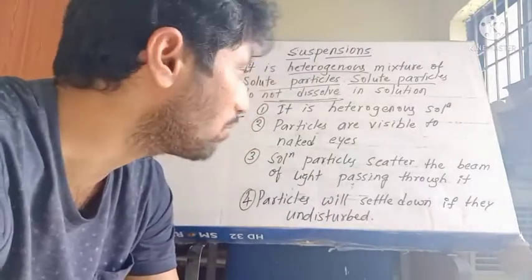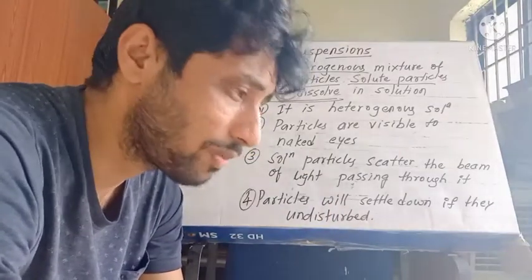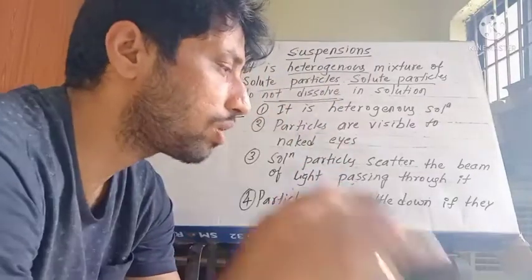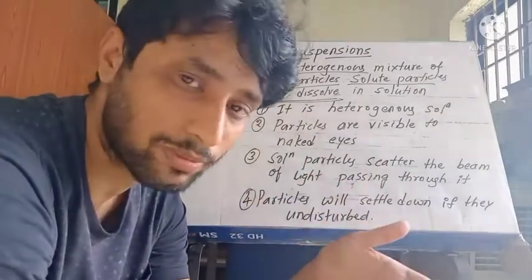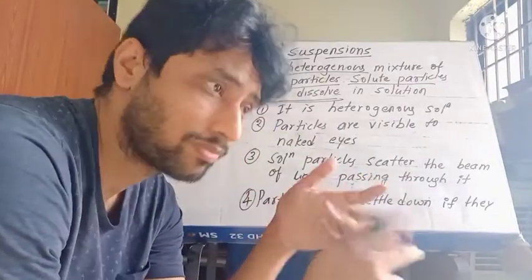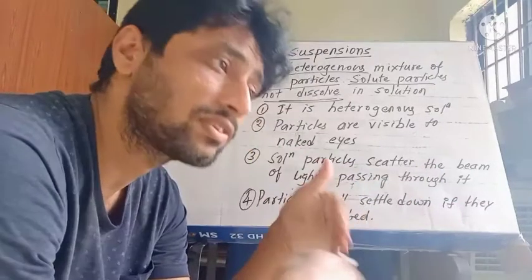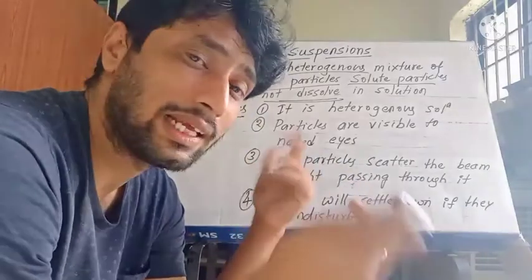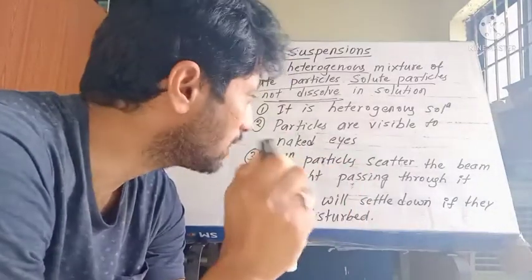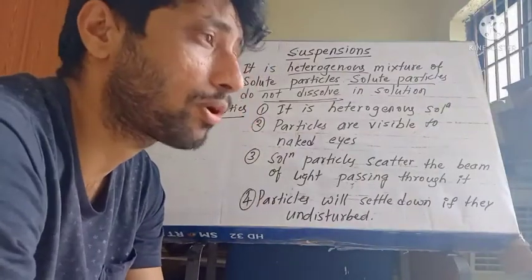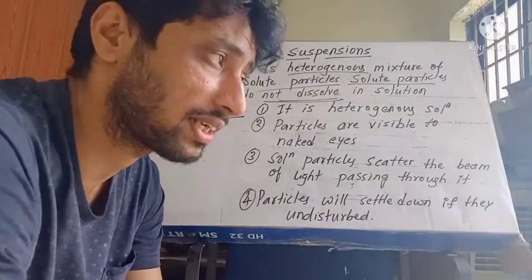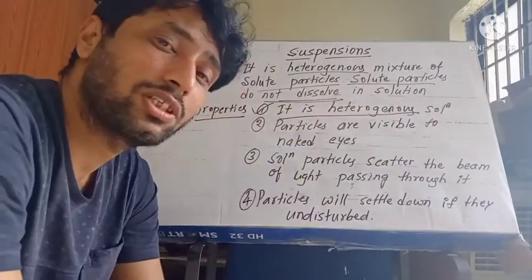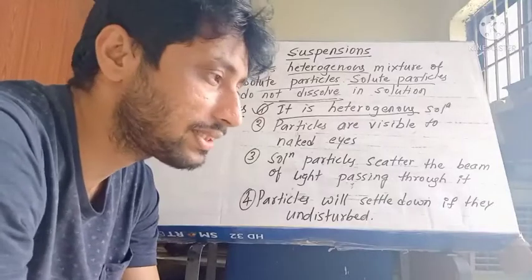Because the particles do not dissolve, it is called a heterogeneous mixture. So the definition of suspensions is: suspensions are a heterogeneous mixture of solute particles which are present in the solvent and do not dissolve completely in the solution. Now let's look at the properties of suspensions. The first property is essentially this definition — it is a heterogeneous mixture.